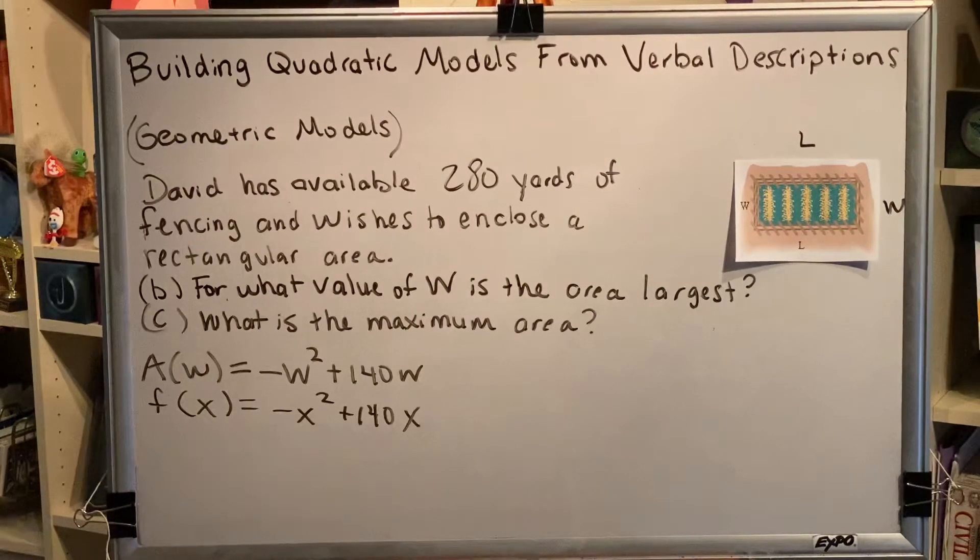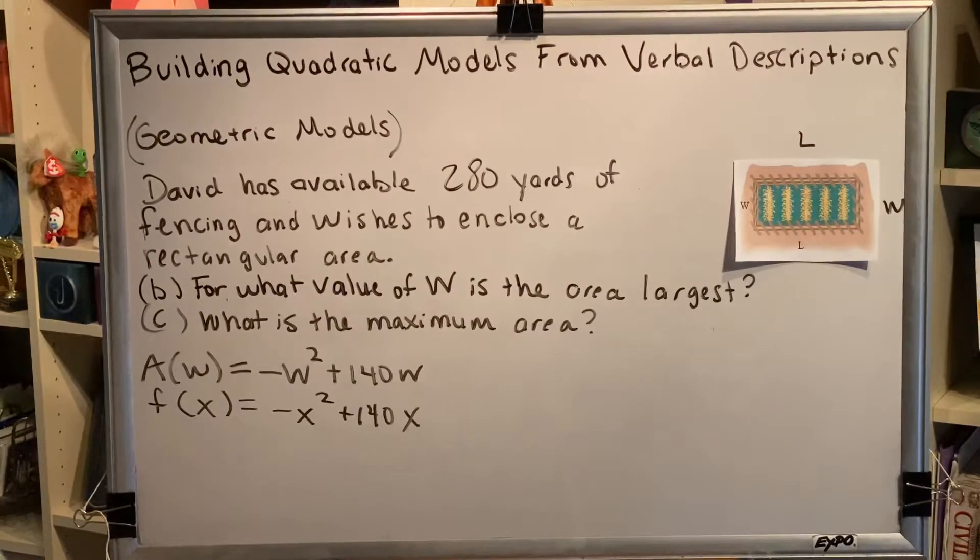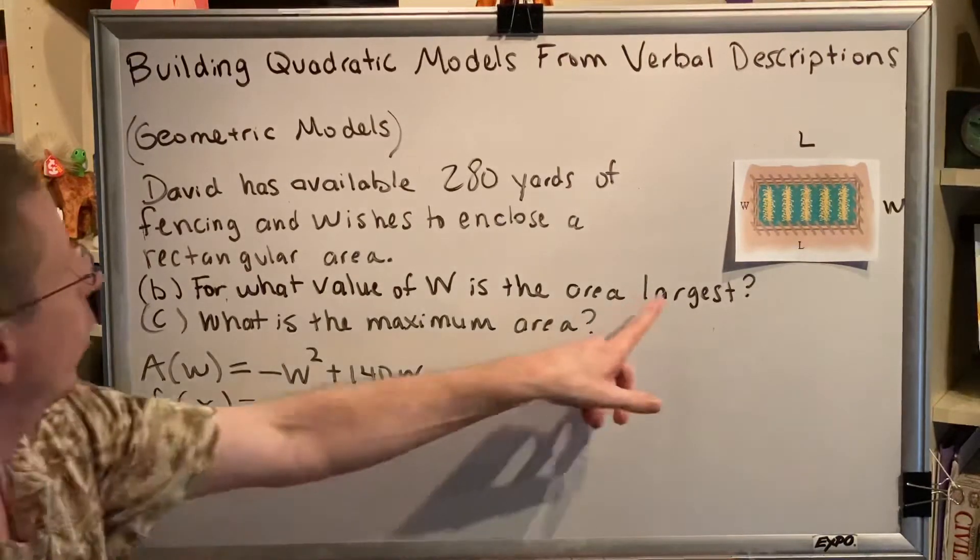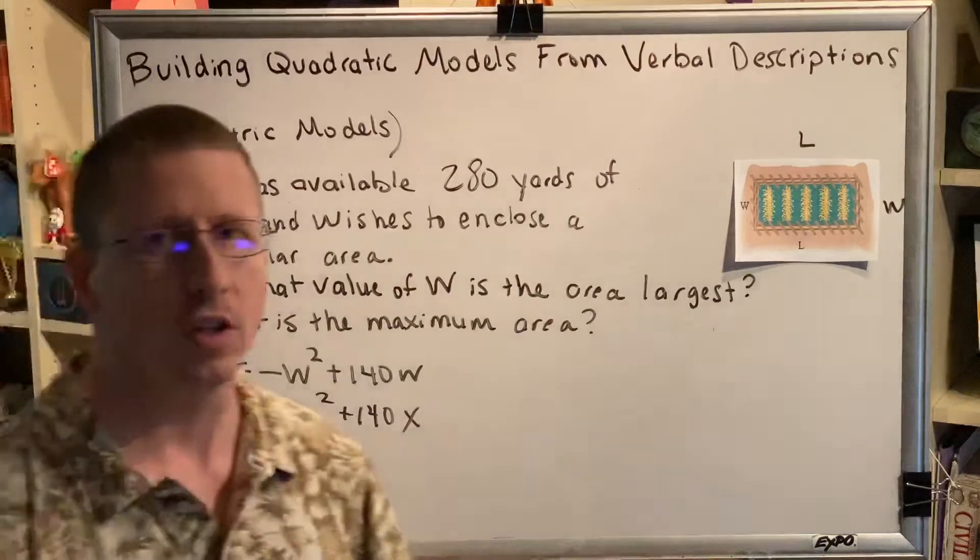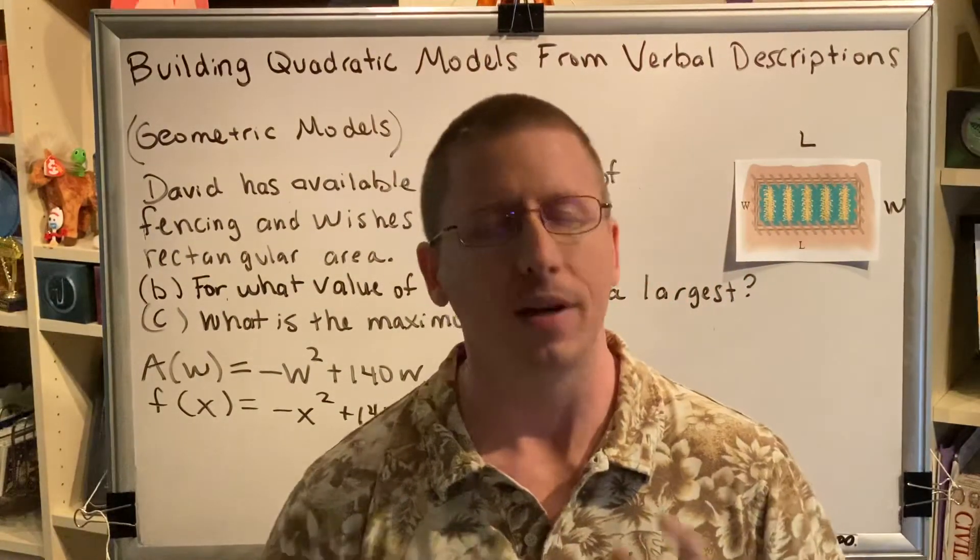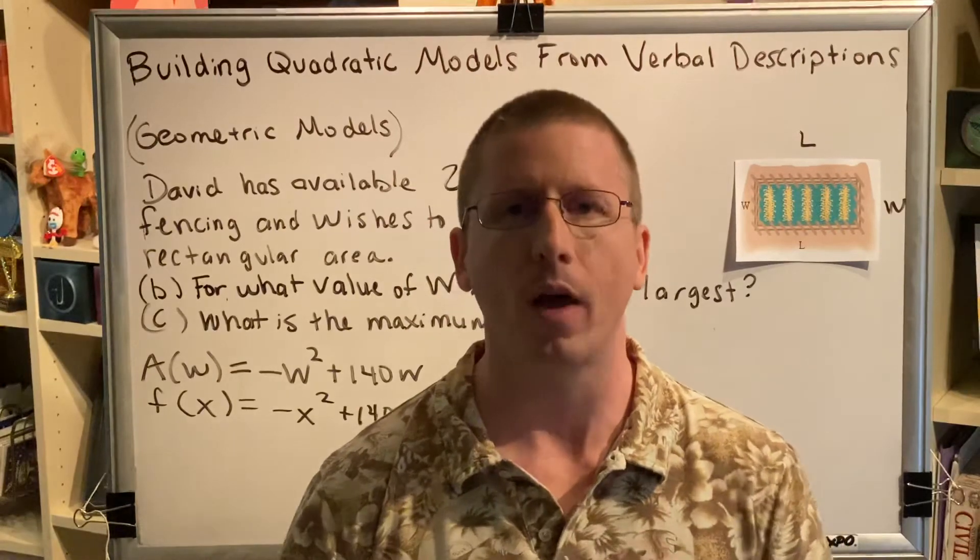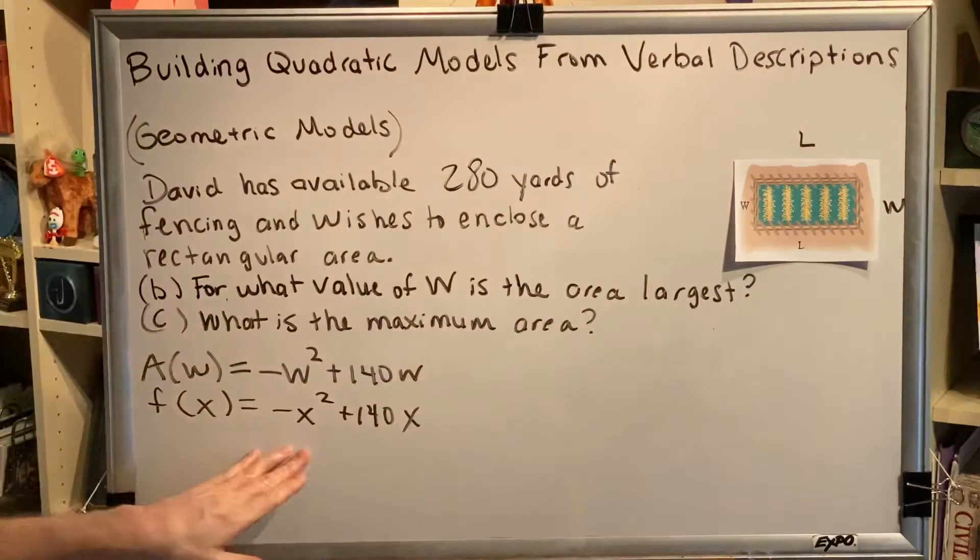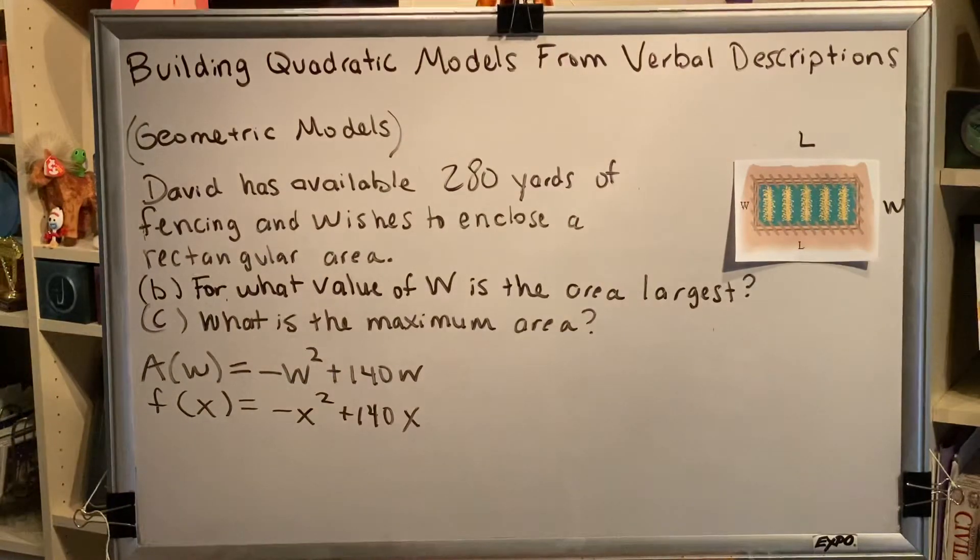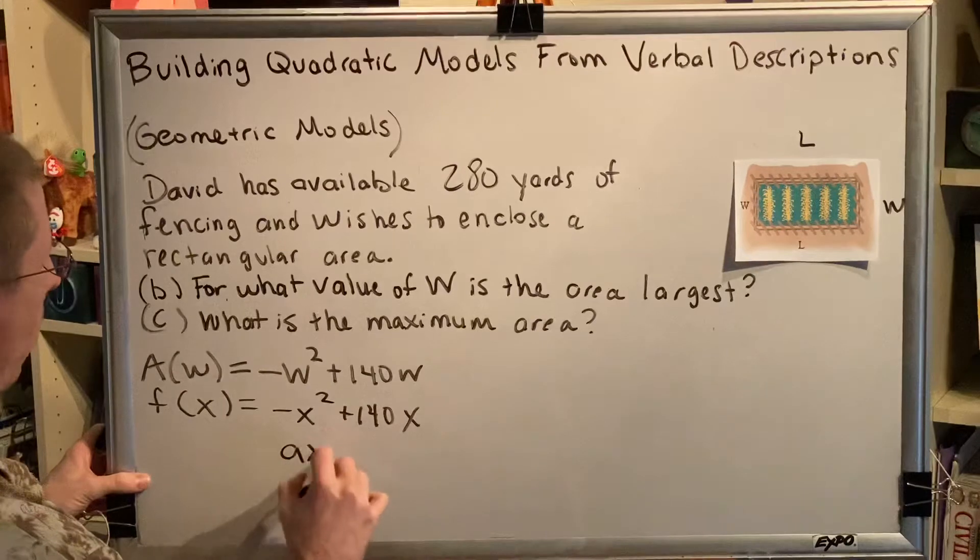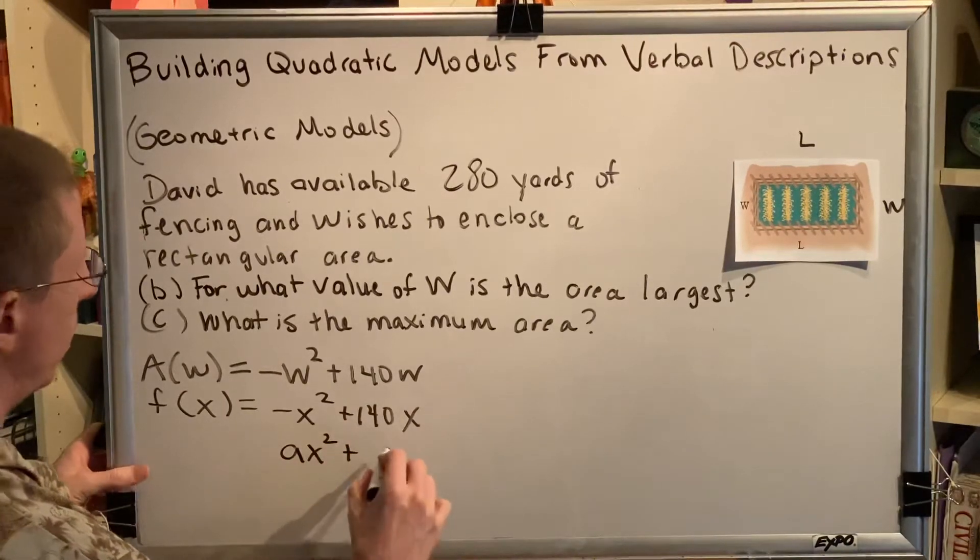From this, we were able to do two things that are both very important. Whenever you see a problem and it uses an extreme word like largest or maximum, the first thing you need to do is think to yourself, is this quadratic? Because if it is, then the vertex will help you find the minimum or the maximum. So is this quadratic? Is negative X squared plus 140X quadratic? The answer is yes. It matches the form of a quadratic expression.